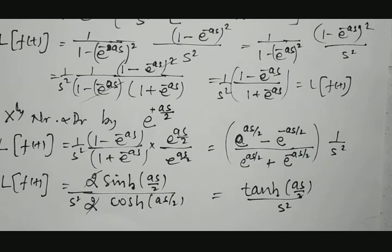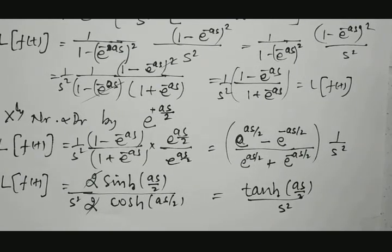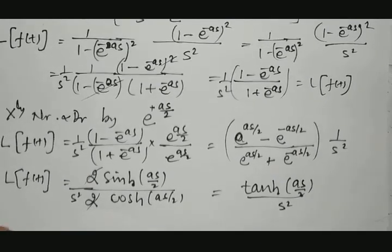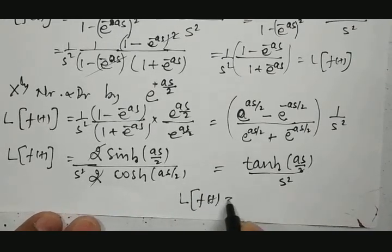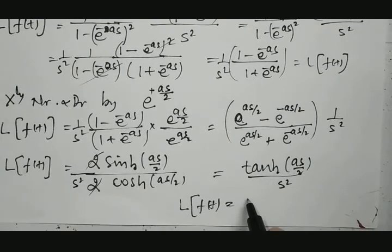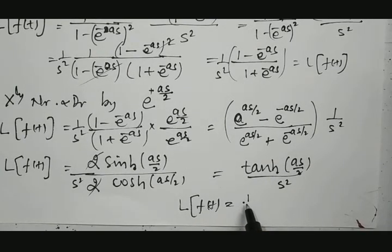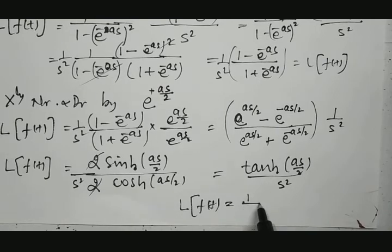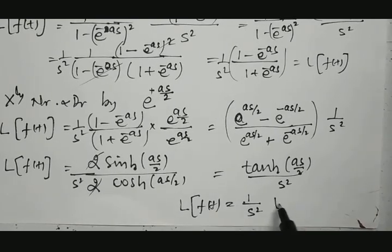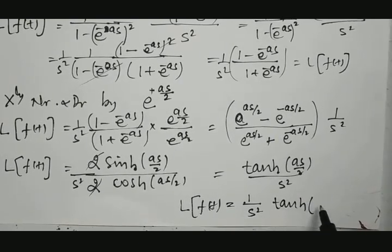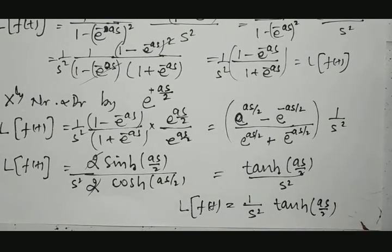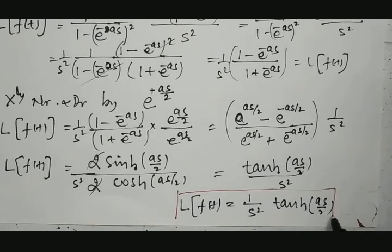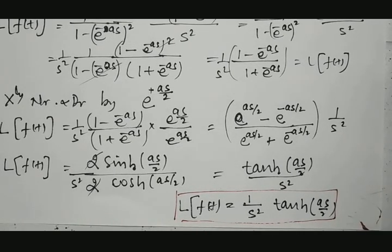Therefore, as per the example, the Laplace transformation of f(t) equals (1 divided by s squared) times tanh(as/2). This is the required result from the given periodic function. Thank you.